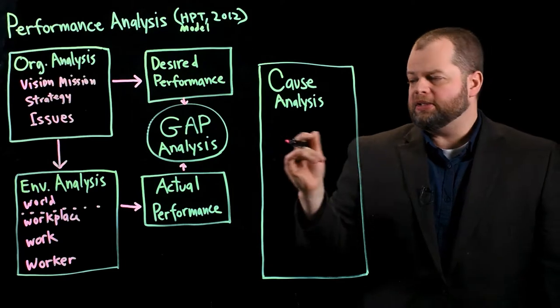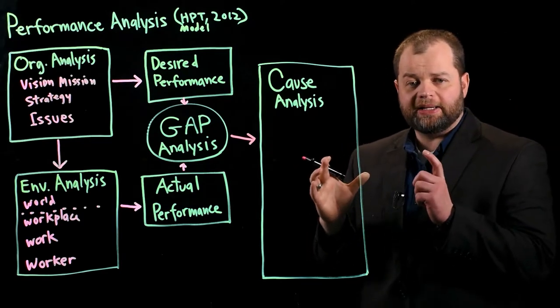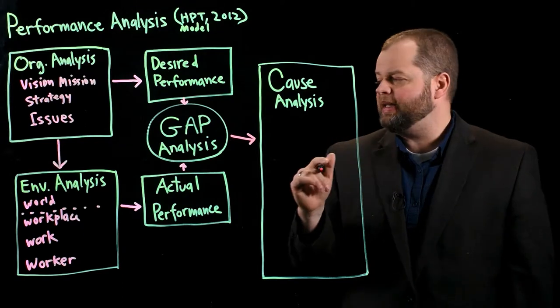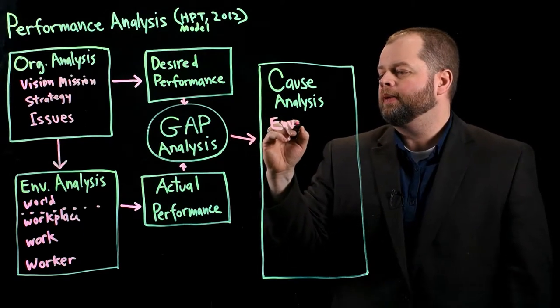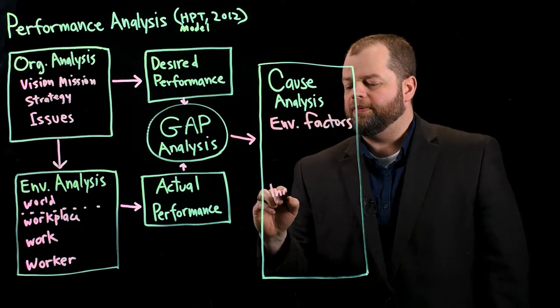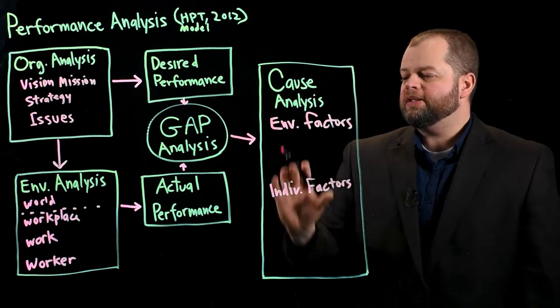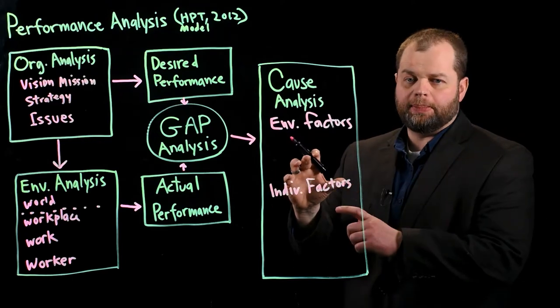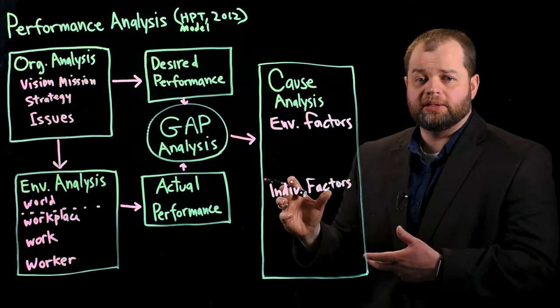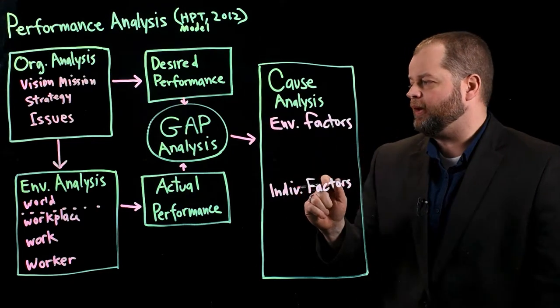The next kind of flow here is to do our cause analysis. And this is where we look at the factors that are actually affecting performance. And typically these can be organized into two big categories. One is the environment, environmental factors. And then there's also individual factors. And so these two factors, these categories of factors really influence that performance. And so I think maybe if you remember, there is a model called the behavior engineering model that really separates into these categories. And so some of these different things that you might see in these factors are...